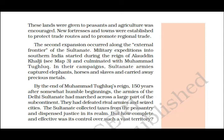The second expansion was along the external frontiers of the Sultanate, with military expeditions into southern India. This started during Alauddin Khilji's time. With Muhammad Tughlaq, Sultanate armies captured elephants, horses, slaves, and precious metals. By the time Muhammad Tughlaq's reign ended, over 150 years the Delhi Sultanate had taken control of large parts of the subcontinent, defeating armies and capturing their cities.